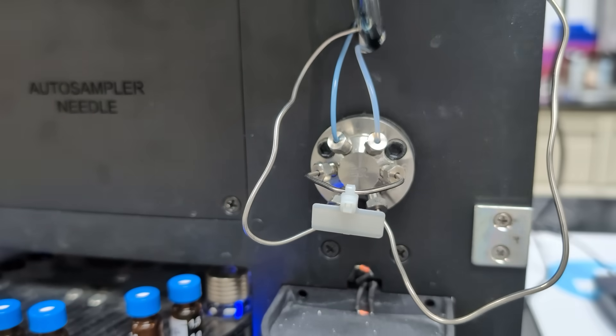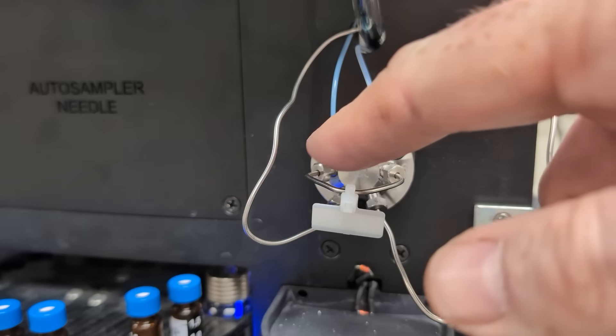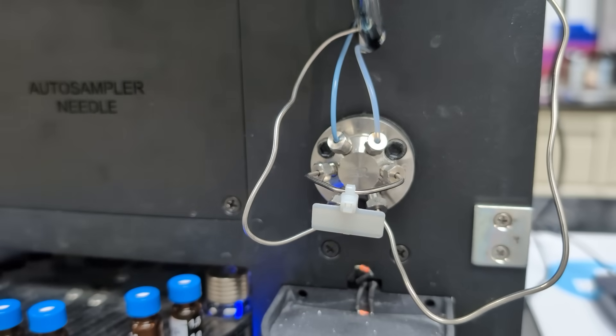And then when that happens, we allow the system to then clean the needle while the run is happening, speeding up our run just by a little bit. So we pre-clean before our next injection. That way you always have a nice clean needle and clean sample loop.